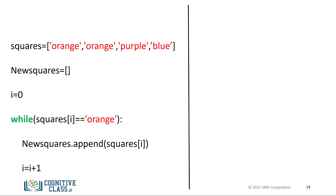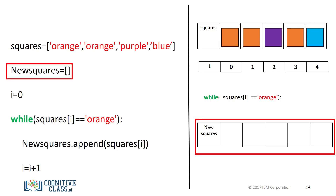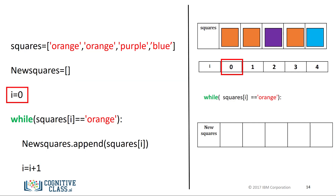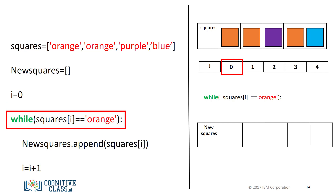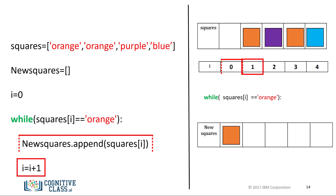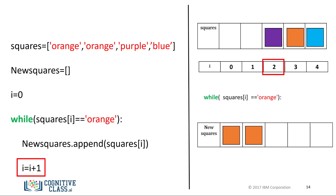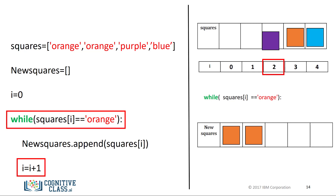Let's use a list with the names of colors to represent the different squares. We create an empty list of new squares. We start the index at zero. The while statement will repeatedly execute the statements within the indent until the condition inside the bracket is false. We append the value of the first element of squares to new squares, then increase i by one. We append the second element, then increment i again. Now the value in the array squares is purple — therefore, the condition for the while statement is false and we exit the loop. Check out the labs for more examples of loops, many with real data.